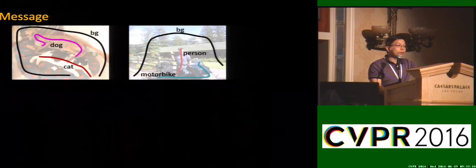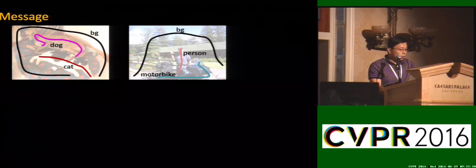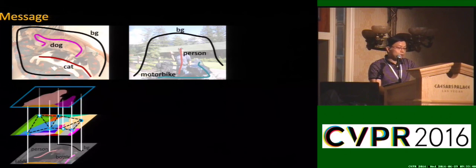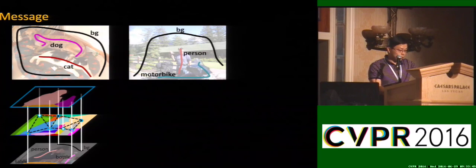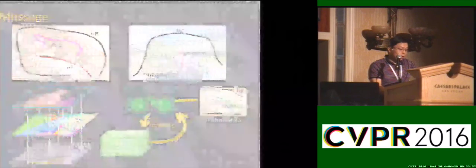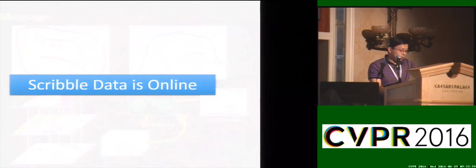We have several take-home messages. First, weakly supervised methods could be important given the inconvenience of generating different levels of annotation data. Our system is not sophisticated; what we want to show is the high potential of this line of research, especially in this data-demanding era. Our semi-supervised experiments manifest that extra scribble annotation is indeed helpful. Finally, our scribble data is already online, and we believe there is still much room to utilize it in the future.